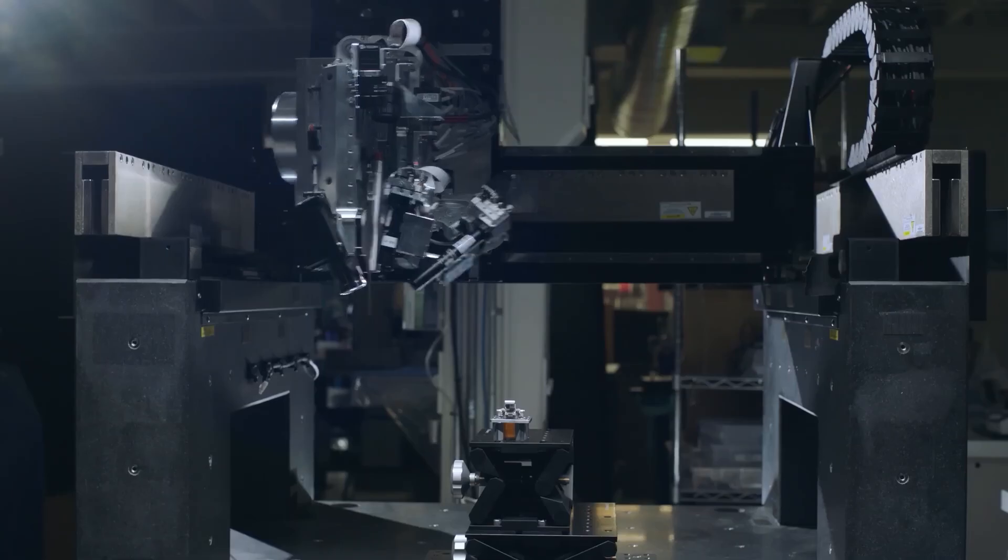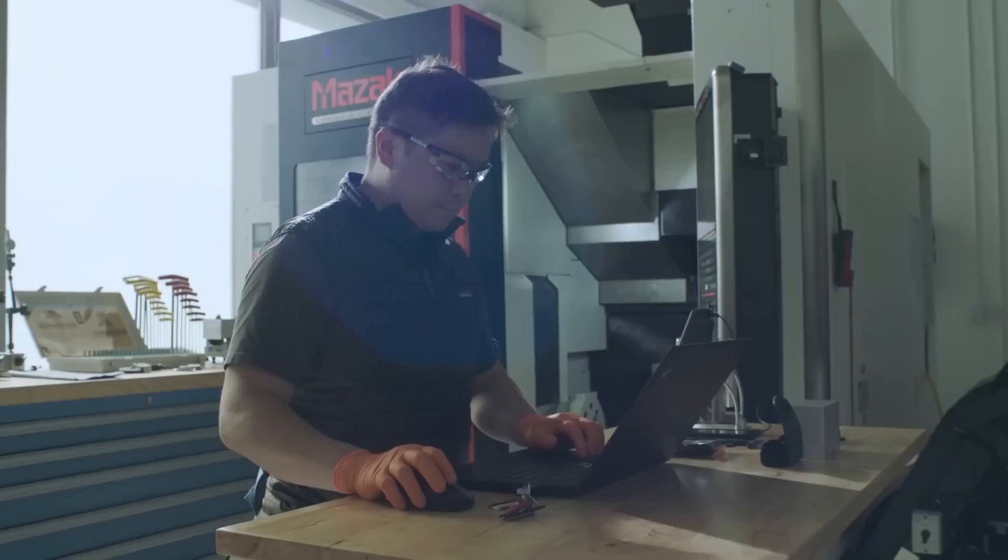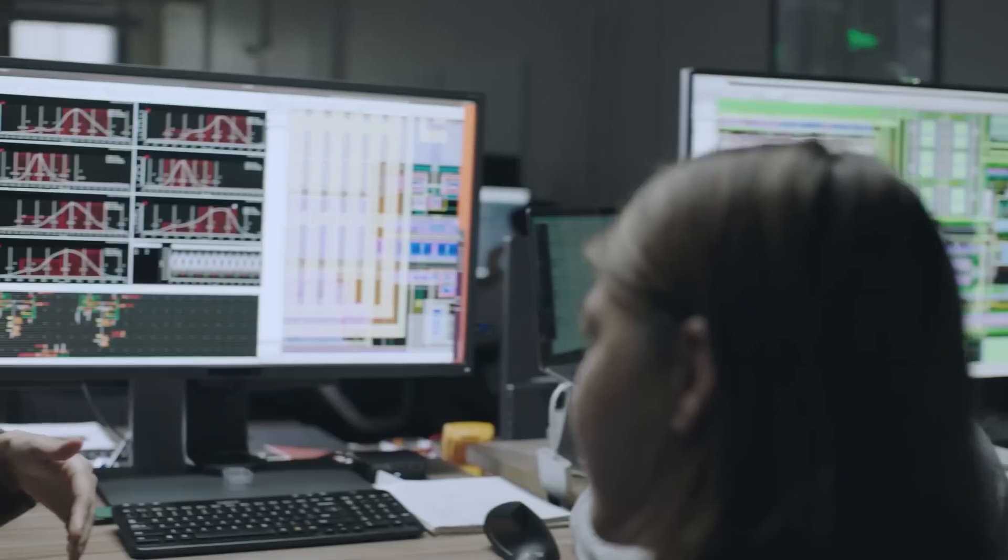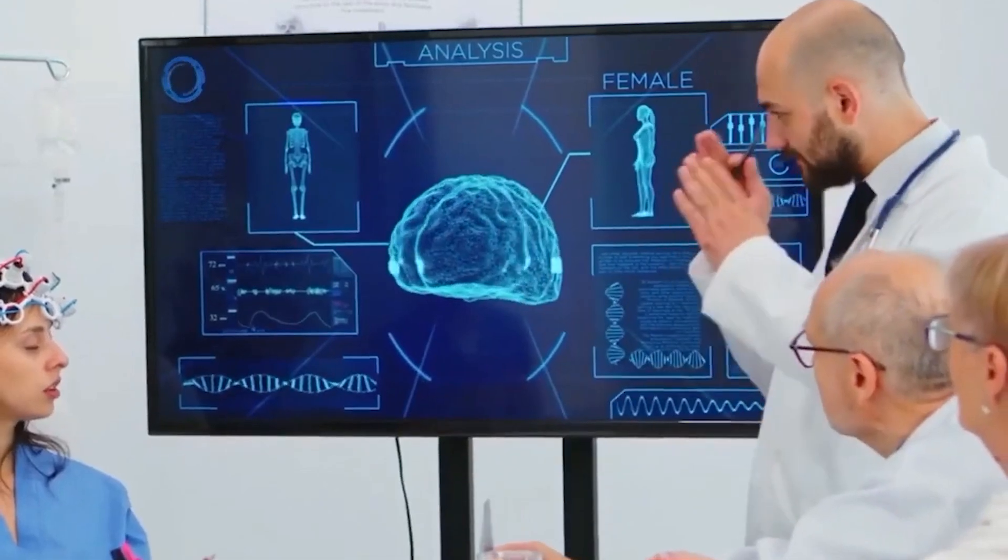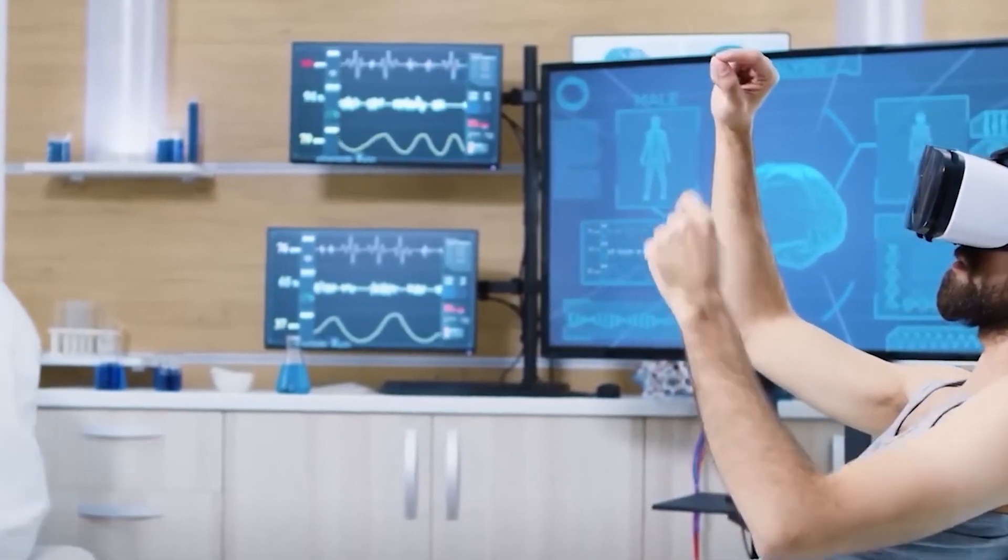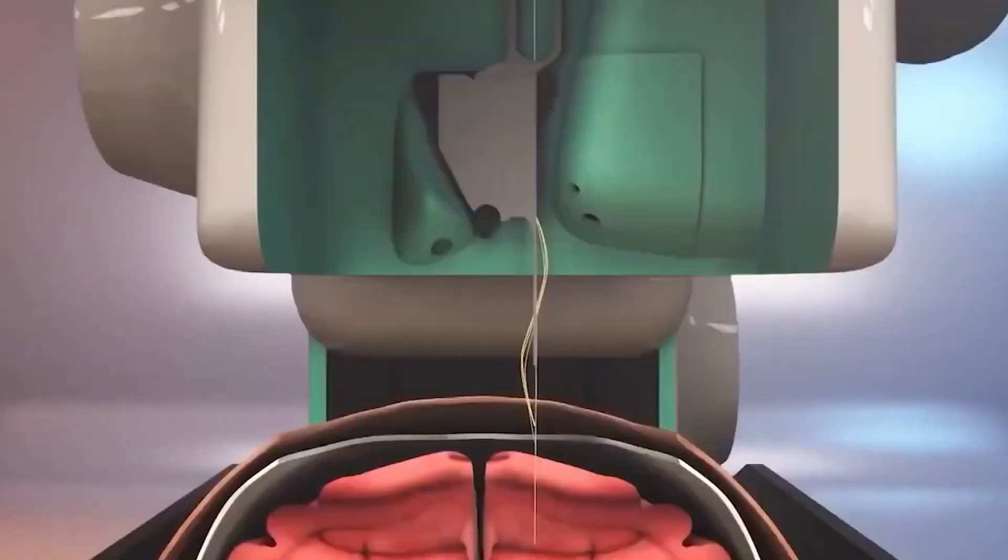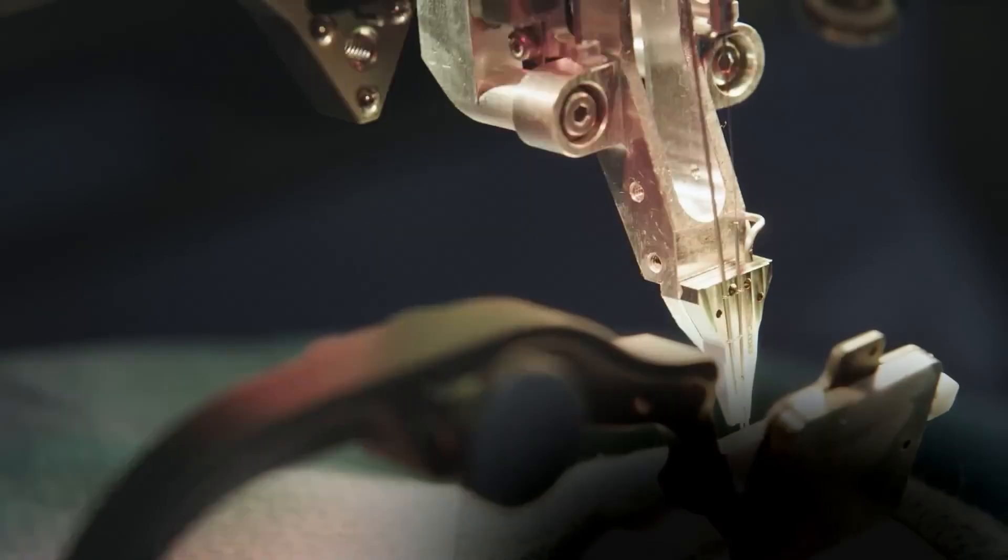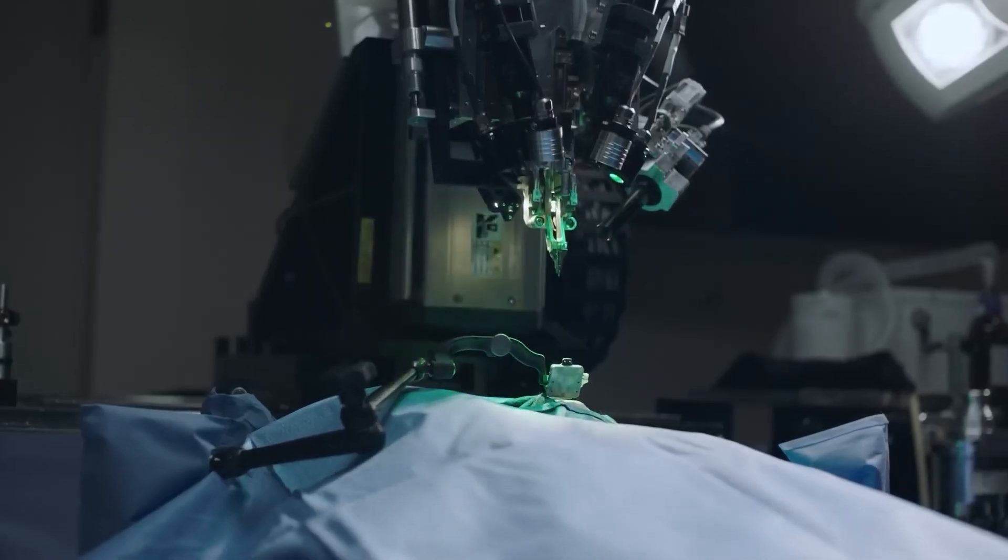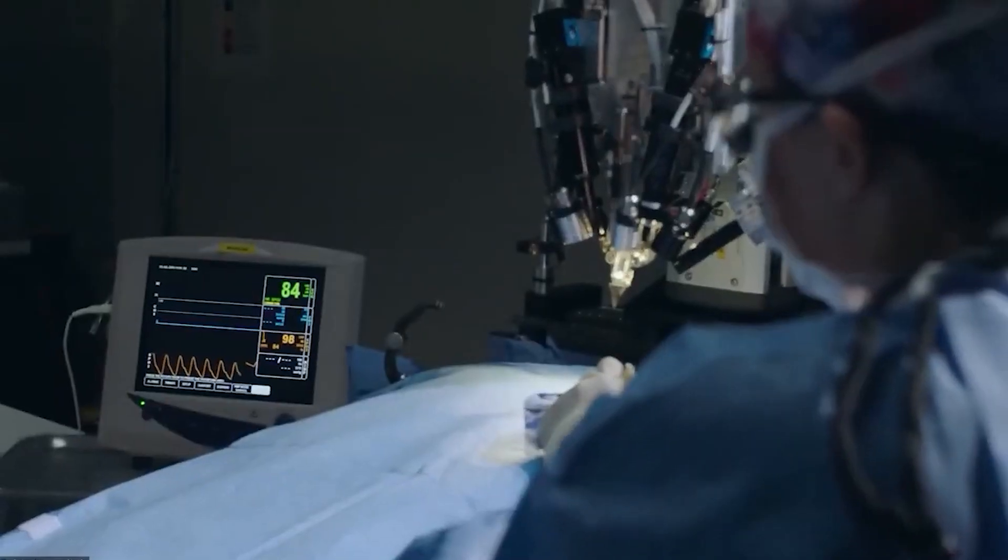Neuralink intends to conduct experiments on humans, selecting a maximum of 10 patients who have specific physical disabilities or illnesses. Their primary focus in these experiments is to enable individuals with complete paralysis to control solely electronic devices like computers or smartphones through their thoughts. In our bodies, the brain generates electrical signals that travel through nerves to control our organs and muscles. These electrical pulses can be considered the programming language of the body. However, physical injuries or degenerative diseases may disrupt the connection between the brain and the body. Neuralink's technology acts as a bridge, allowing these electrical signals to bypass the damaged connection. This enables individuals to regain the ability to control devices and interact with the world using their thoughts.